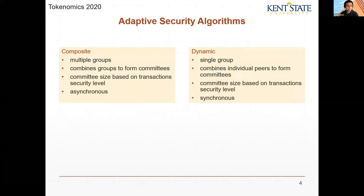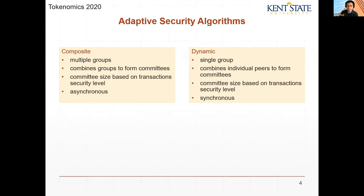We introduce two algorithms: composite and dynamic. Composite divides all peers in the system into multiple groups, each with its own blockchain to maintain. When transactions come in, these groups are joined together to form committees of varying size depending on the transaction security level. The higher the security level, the more groups are combined to perform consensus. Composite is also asynchronous because each group maintains its own ledger and doesn't have to wait for other groups outside its committee to finish their consensus.